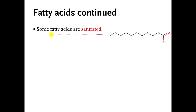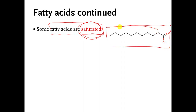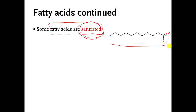There are some fatty acid molecules that are saturated. Saturated means a collection of carbon atoms has all single bonds, and as a consequence has the maximum number of hydrogen atoms attached to those carbons. This is a saturated fatty acid because the tail has carbons that are all single bonded, giving it the maximum number of hydrogens.